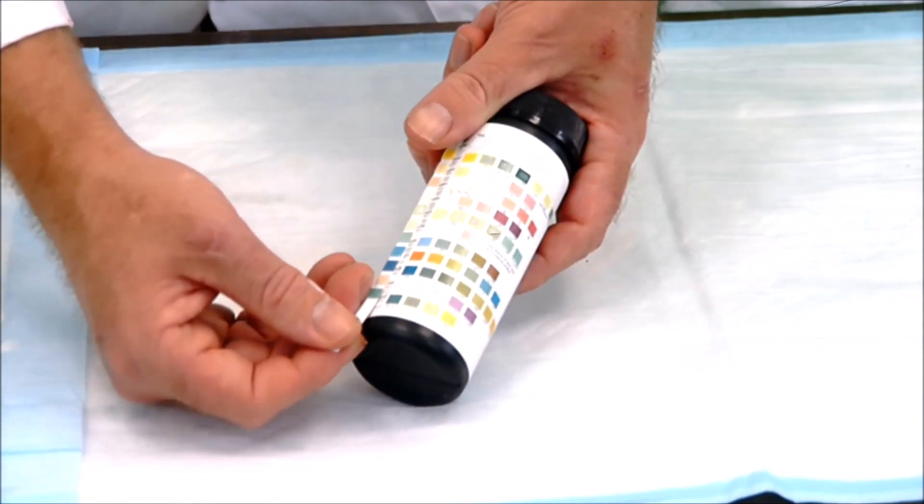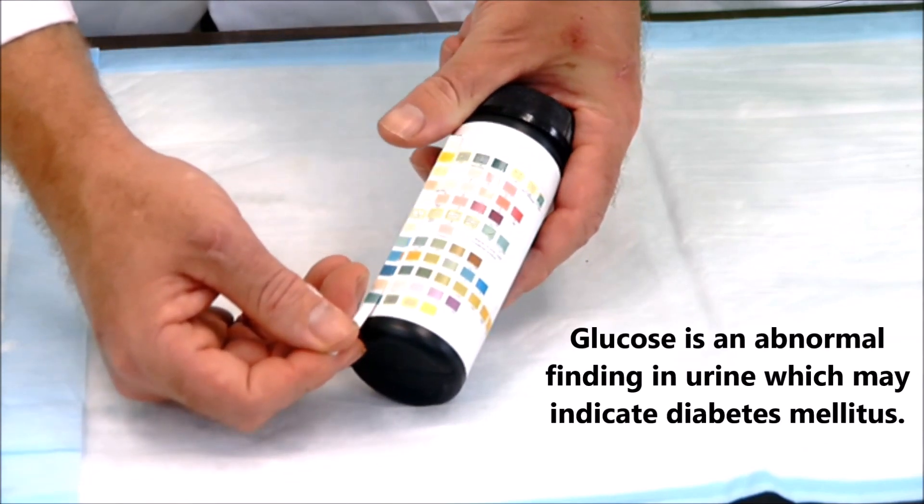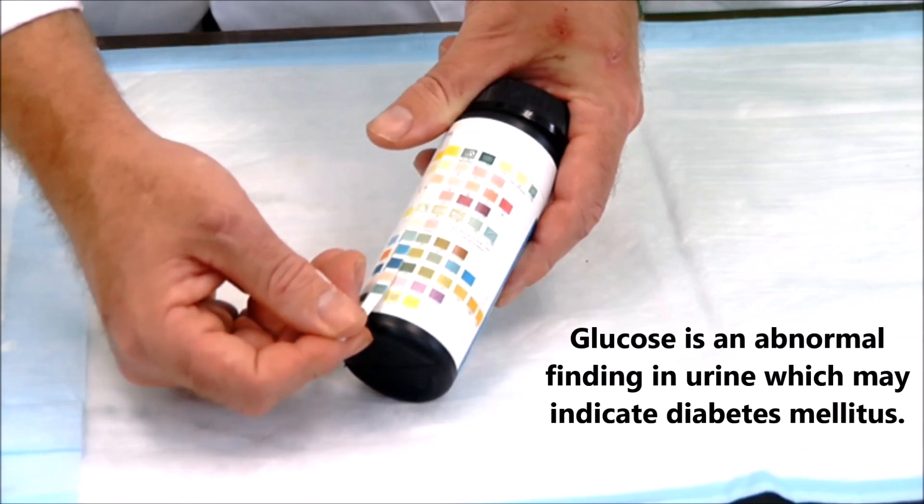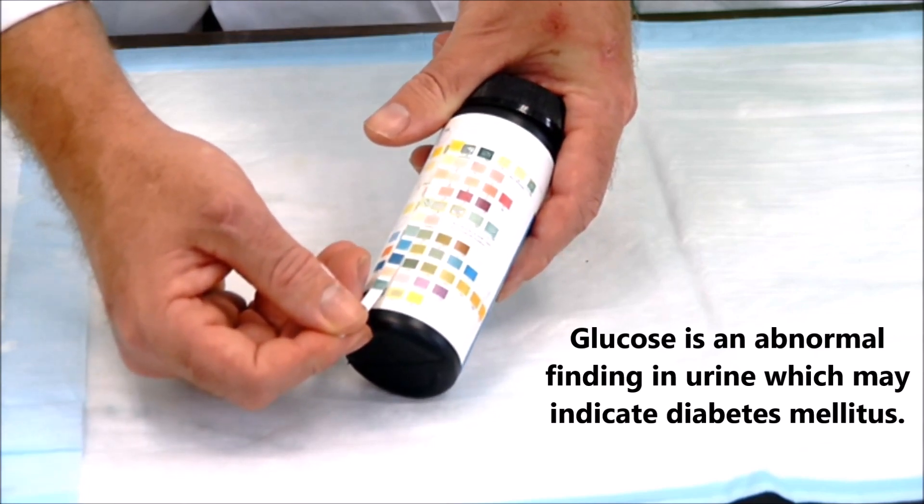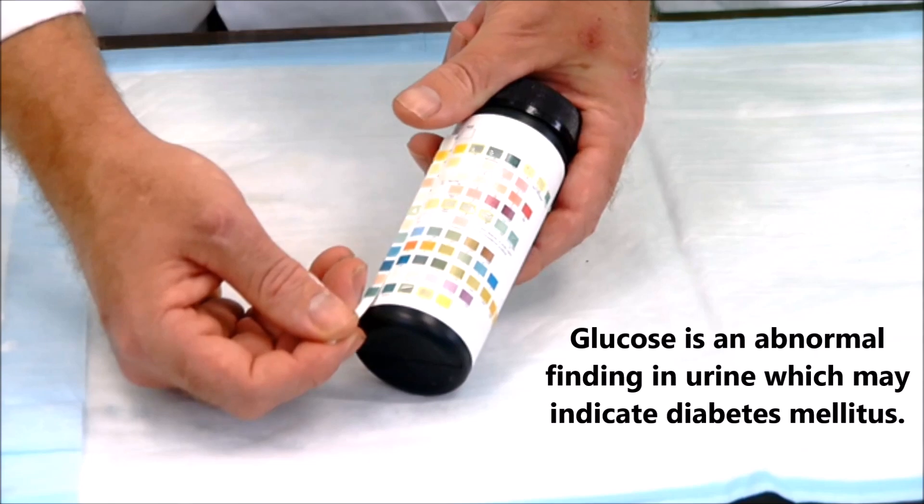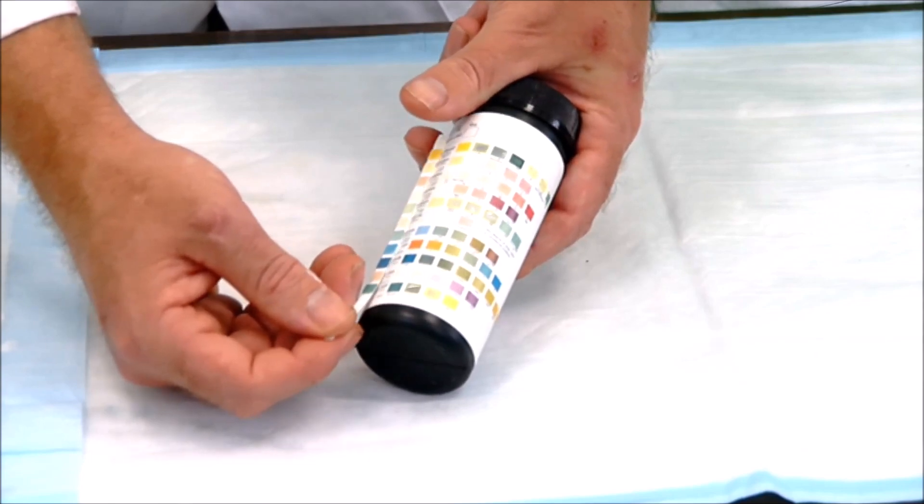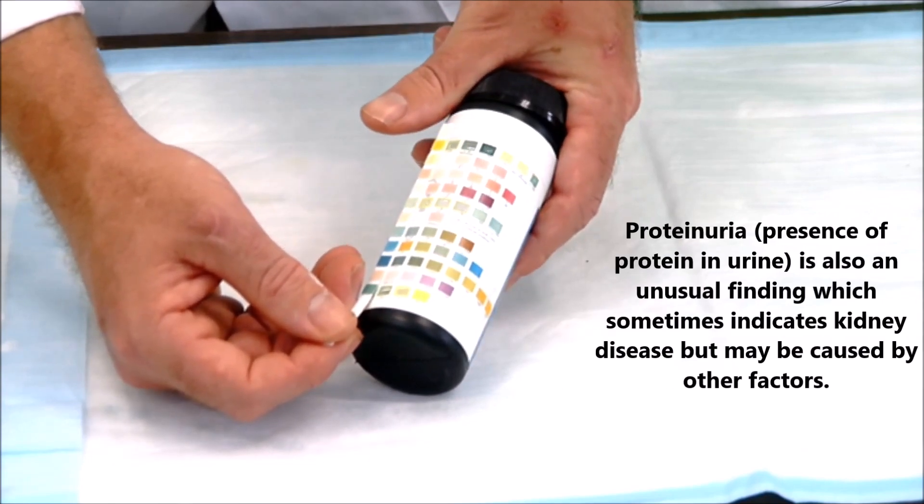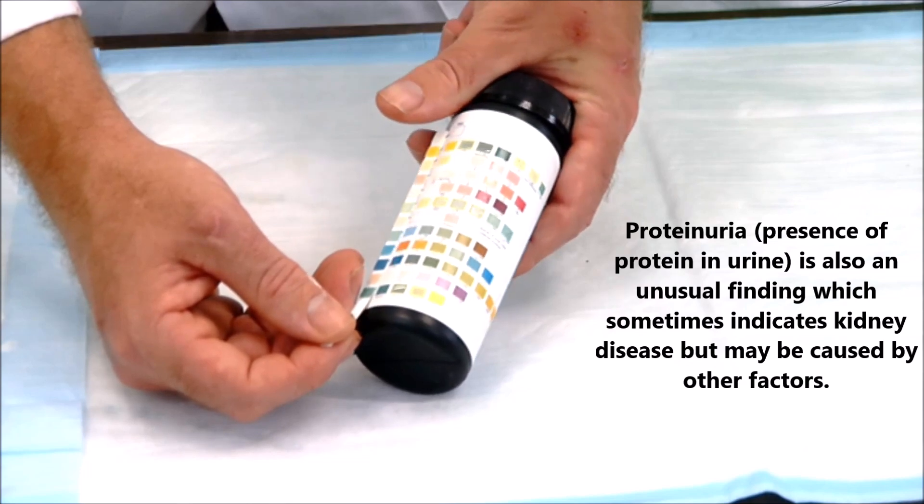Okay, next I want to look for my glucose strip. It seems like this strip actually does show a positive test for glucose, so that would be abnormal as well. Okay, and then next up here, I'm looking at protein. Protein does match up with a trace of protein. That would be unusual.